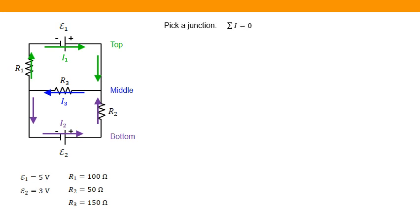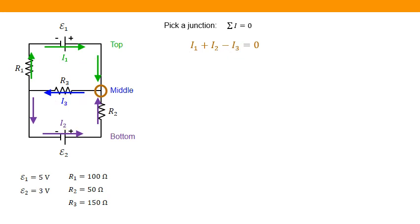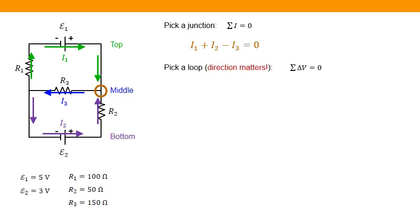From there, we pick a junction — remember, all current flowing in has to flow out again. Picking the junction on the right: I1 flows in, I2 flows in, and I3 flows out. So we get I1 + I2 − I3 = 0. That's one equation. If I tried using the other junction, I'd get the same equation with a minus sign, so I won't use that. Now I've exhausted my junctions and need to use the loop rule.